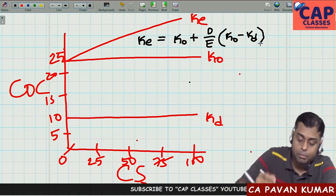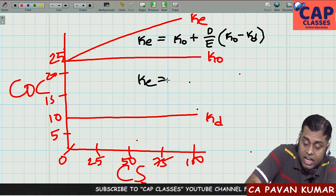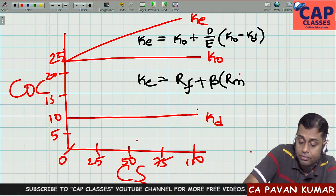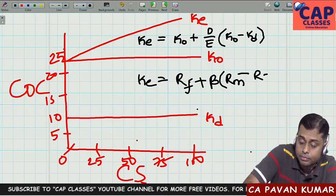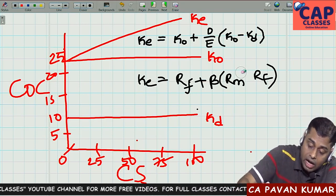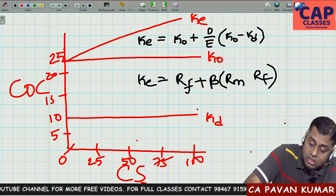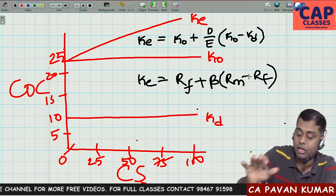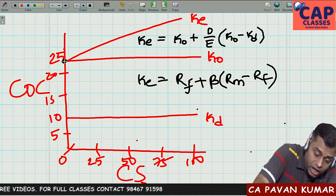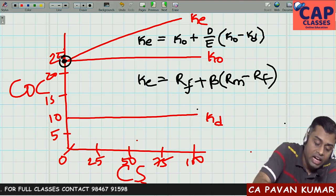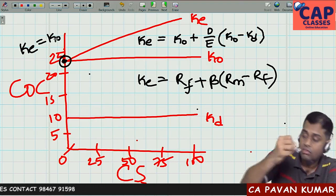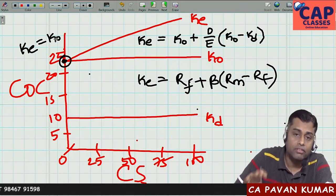Do you remember in the Capital Asset Pricing Model, we calculated KE = Risk Free Rate + Beta × (RM − RF)? Same concept here. In the case of an unlevered firm — a company with 100% equity capital and zero debt — KE is equal to KO.